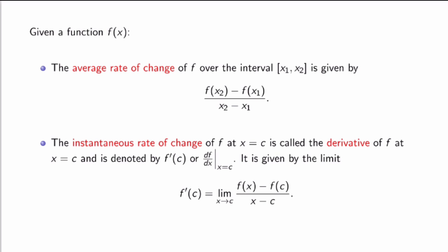And you can also define its instantaneous rate of change at a certain point x equals c in exactly the same way as before, as taking the limit. So you take the average rate of change but take the limit where your interval becomes very, very small around the point x equals c. It has a name, it's called the derivative of f. It's also denoted by f'(c) or df/dx evaluated at x equals c.